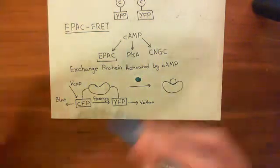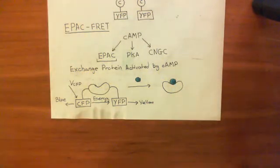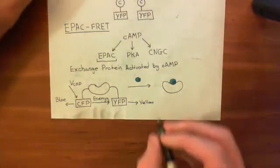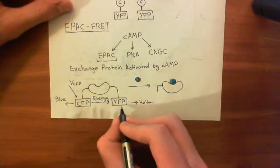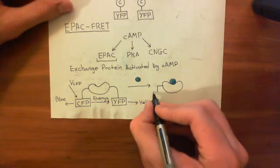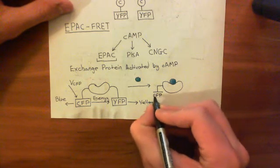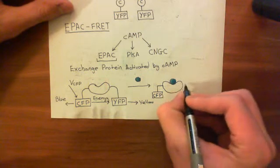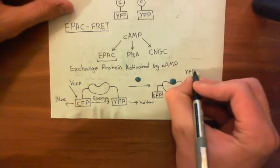And basically, what that is going to do is change the conformation of the protein. When the conformation of the protein changes, the idea is that we will have tagged on this cyan fluorescent protein and this yellow fluorescent protein in portions which will now be moved apart. So the cyan fluorescent protein stays down here and yellow fluorescent protein might move up here. So they're now further apart.